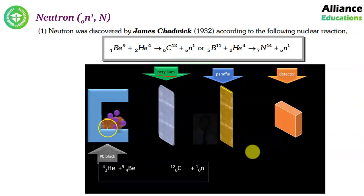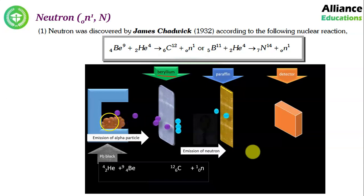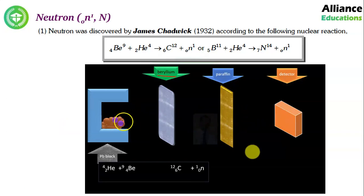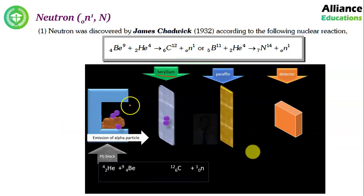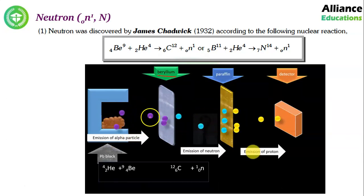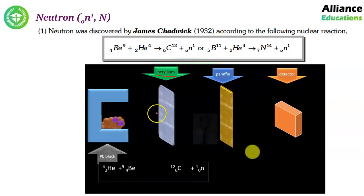Lead is a very dense metal — so dense that radioactive particles like alpha particles and beta particles cannot pass through it. The radioactive material is kept in a lead box which has an aperture, as you can see here, through which the alpha particles emerge and hit the beryllium target.